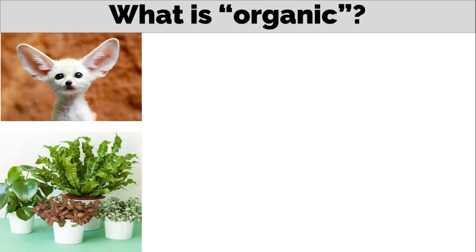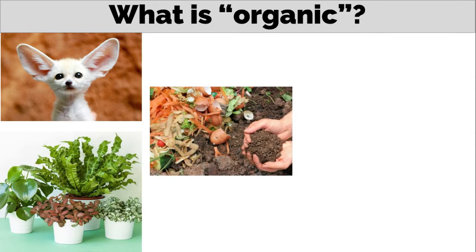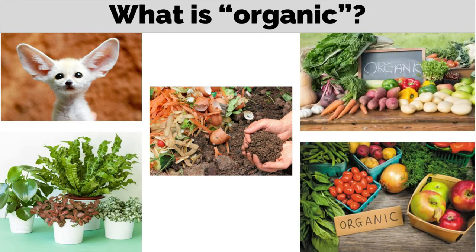First, what do we mean by organic? In everyday usage, the word organic can be found in several different contexts. Chemicals extracted from plants and animals were originally called organic because they came from living organisms, as well as organic fertilizers. They are obtained from living organisms. And organic food is grown without the use of pesticides or synthetic fertilizers.